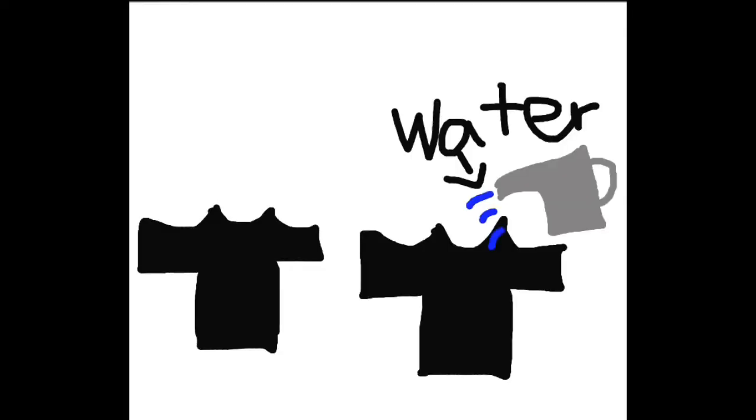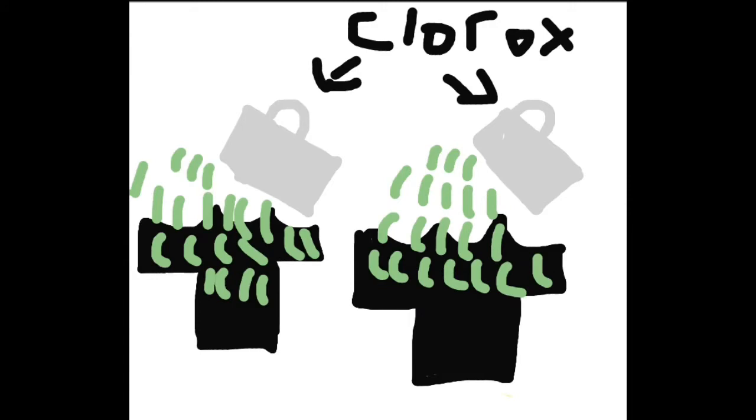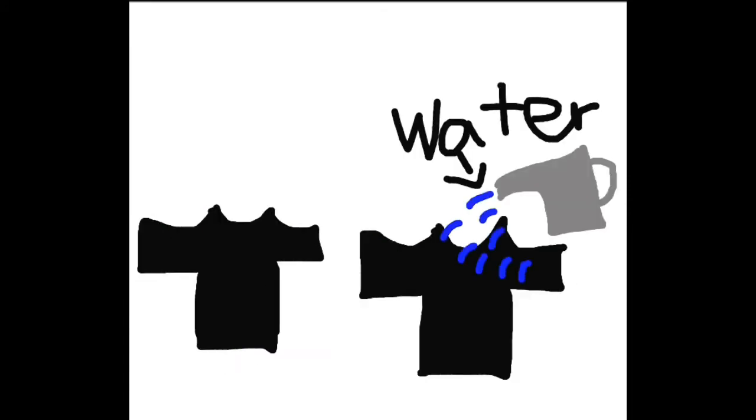In this reaction, increasing the concentrate slows the reaction, so the t-shirt can be cleaned. To increase the concentrate, we have to dilute the t-shirt in water. The t-shirt without the water makes the reaction happen too fast, leaving white spots.